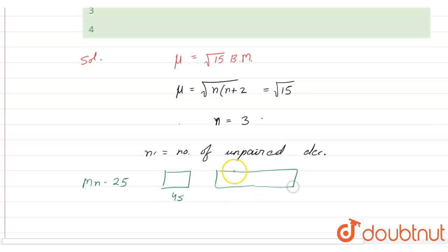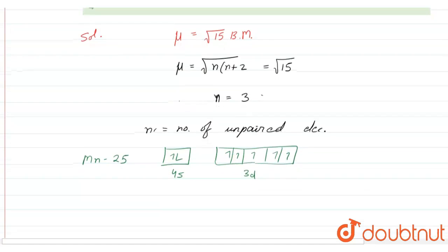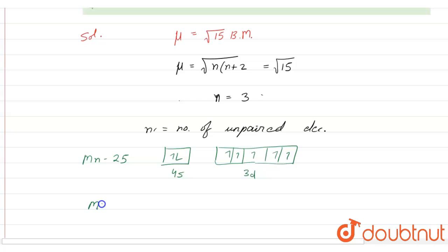It can be drawn like this: it is a d5 system having d sub-shell half filled, and 4s will have two electrons. But in the ionic state, as we are seeing here, it is in some oxidation state...